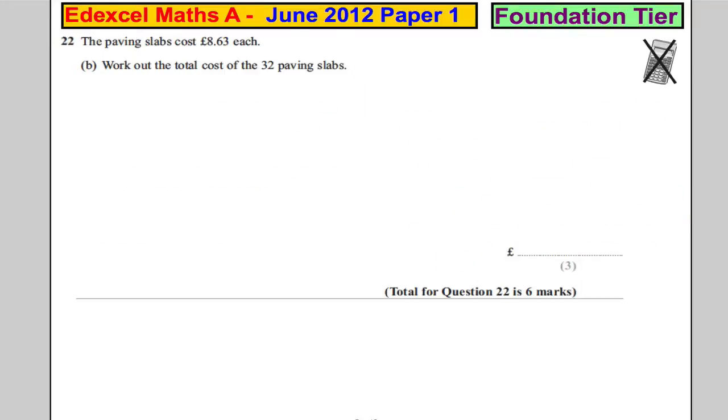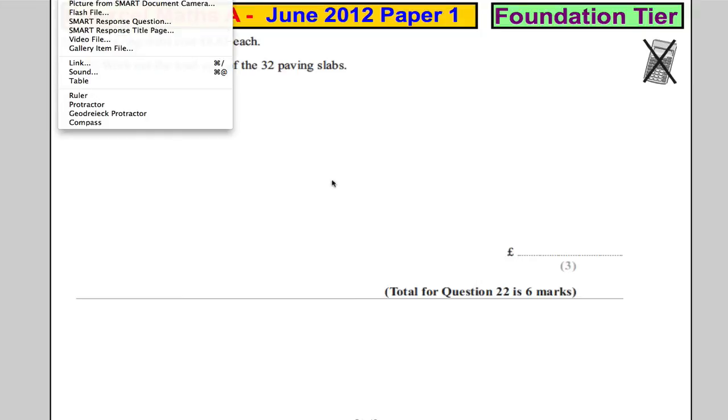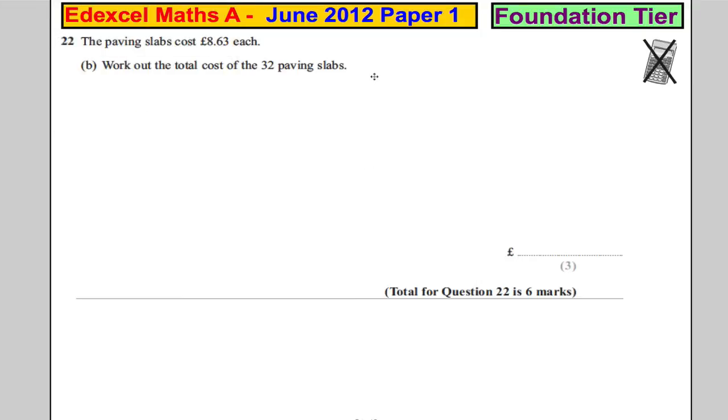So then we are told that each slab is £8.63. Work out the cost of 32 slabs. I'm going to show you all the different ways of doing this multiplication, starting with the lattice method. So £8.63. I'm going to write that up here. £8.63. And I'm going to write down the side, we're going to multiply that by 32. 3 and 2.